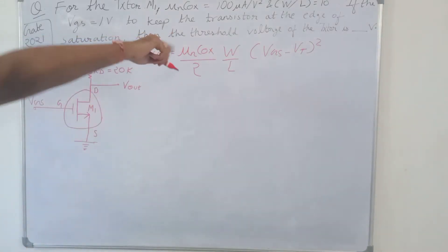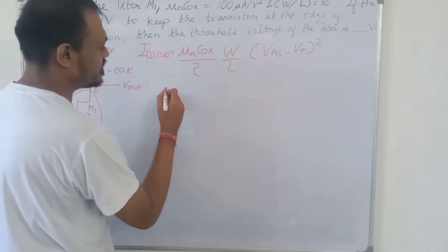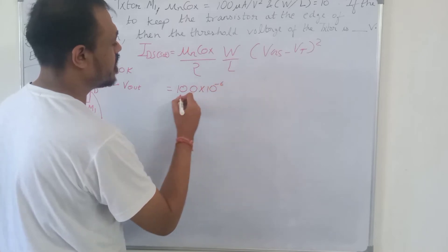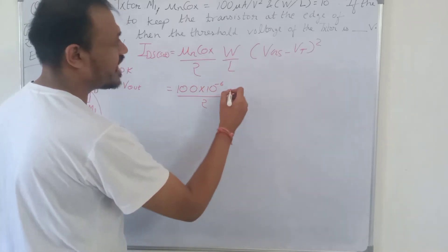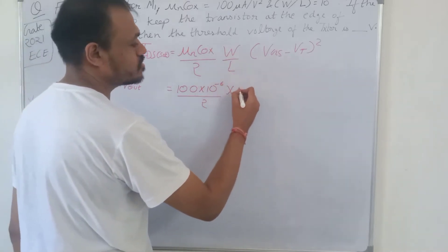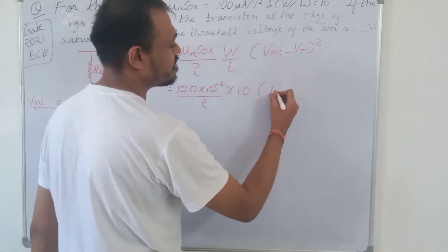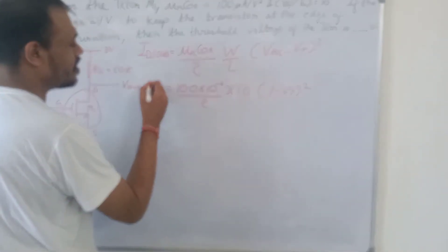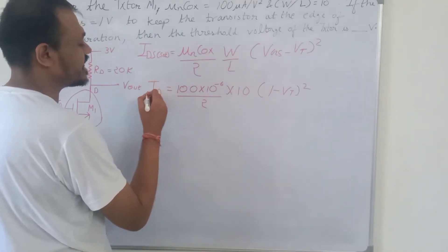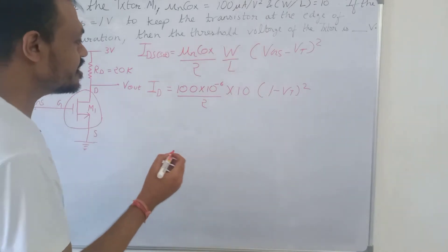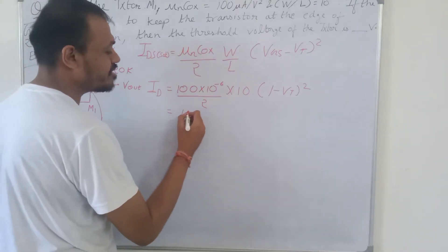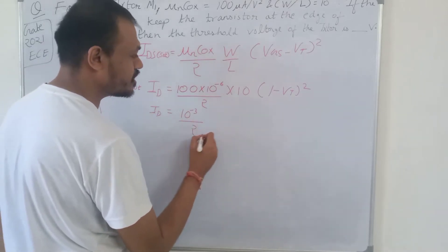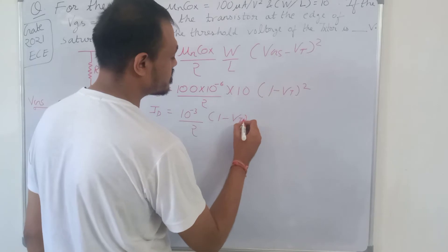μn·COX is given as 100 microampere, so this equals 100 × 10⁻⁶ divided by 2, and W/L is given as 10, so multiplied by 10, and VGS is given as 1, so (1 − VT)². This gives ID = (10⁻³ / 2) · (1 − VT)².